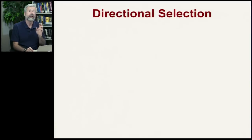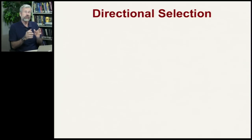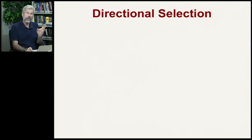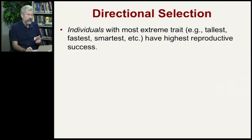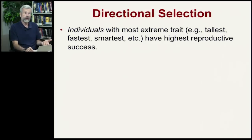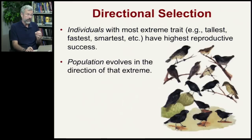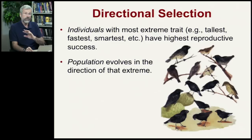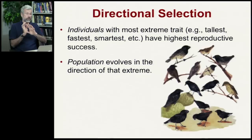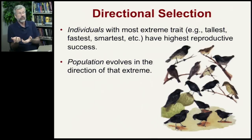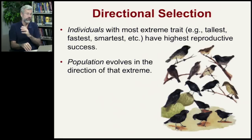There are certain kinds of situations where the most extreme phenotype is at the strongest advantage, and this is called directional selection. This is where individuals with the most extreme trait — the tallest, the fastest, or the smartest — have the highest reproductive success. As a result, the population evolves in the direction of that extreme. Only those individuals that were the tallest, the fastest, or the smartest were able to provide the genetic material to the next generation, so the population shifts and the next generation will see more individuals with that extreme phenotype.